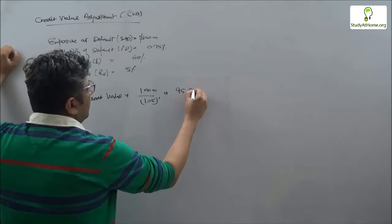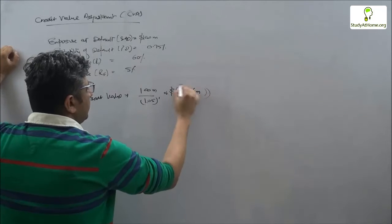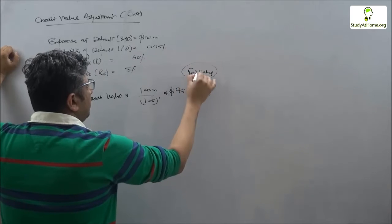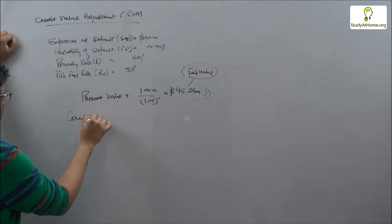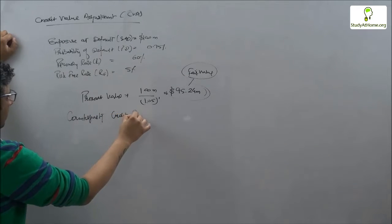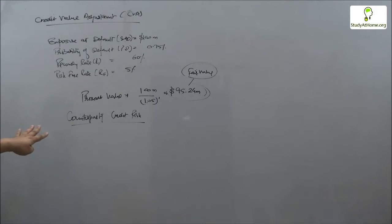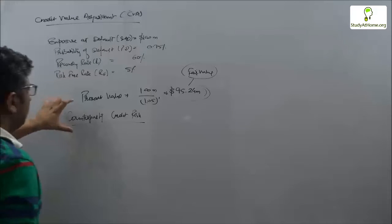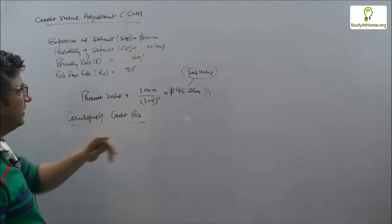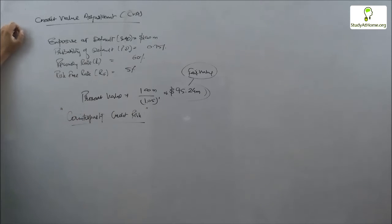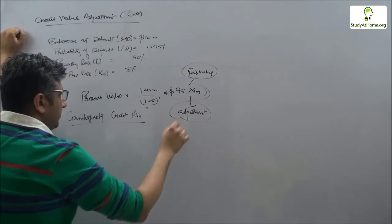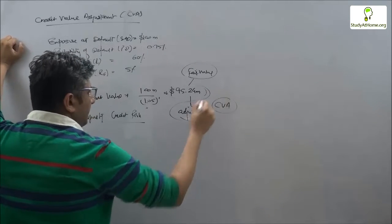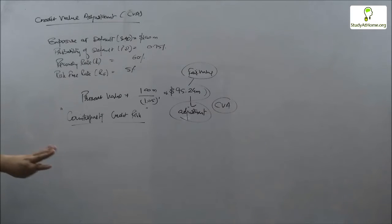Per se this becomes a fair value, but in reality there is a risk which is referred to as counterparty credit risk. We need to assess what is the value of this investment, the amount given to the counterparty, if this counterparty credit risk is also considered. We need to make an adjustment to this amount, referred to as CVA or Credit Value Adjustment.